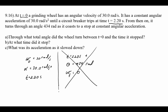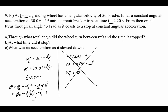Concentrating on the first half: omega naught is 30 radians per second and alpha is 30 radians per second squared with constant acceleration, so the constant acceleration equations are valid. The angle is theta equals theta naught plus omega naught t plus one-half alpha t squared, giving us 30 radians per second times 2.20 seconds plus one-half times 30 radians per second squared times 2.20 seconds squared.